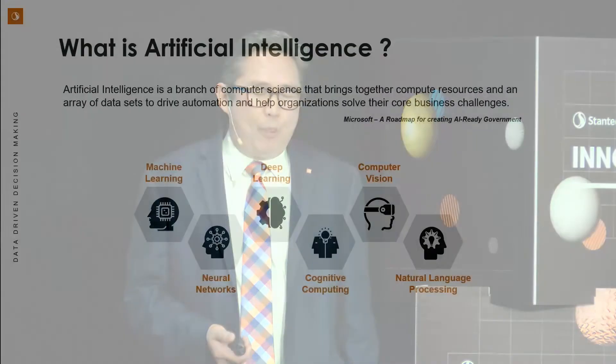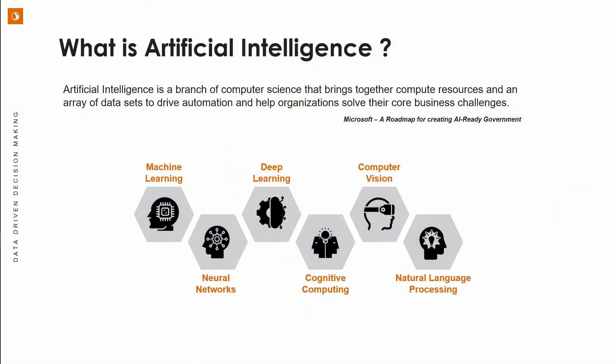I've been talking about artificial intelligence — so what exactly is it? I pulled this definition from Microsoft, not only because they're heavily invested in it, but also because we use a lot of Microsoft cloud-based products. It's a branch of computer science using compute resources and arrays of data sets to drive automation and help solve core business challenges. I'm going to focus specifically on machine learning, because that's the application we're using for this particular project.